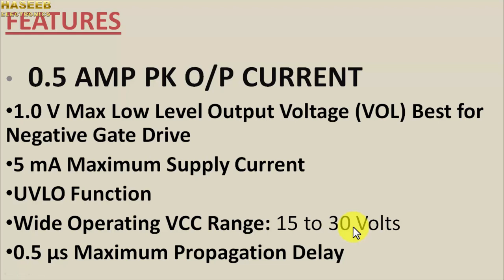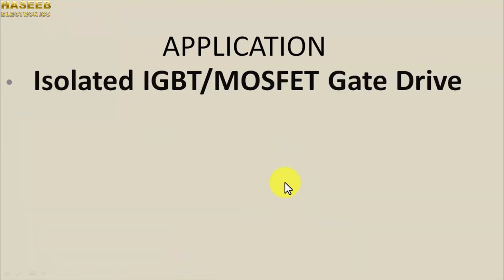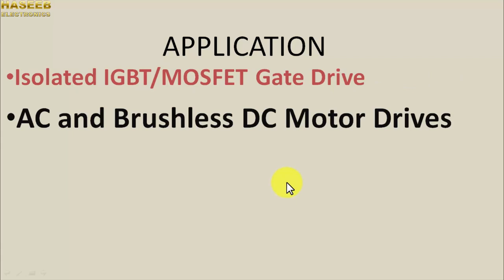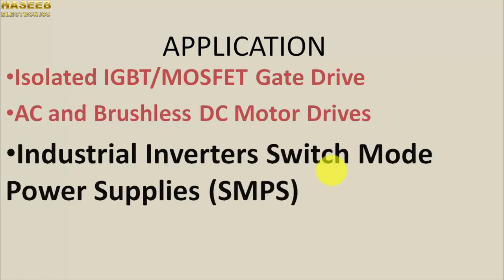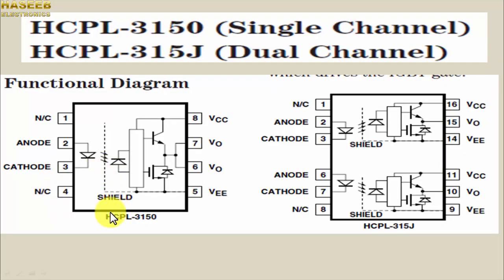It has 0.5 microsecond propagation delay. Propagation delay is the time difference between when we apply an input to a component and when we get the output — every component has a delay time, and here it is less than 0.5 microseconds. It is used in IGBT and MOSFET gate drives, AC and BLDC motors, industrial inverters, SMPS, online UPS, and air conditioners.